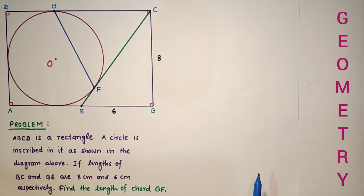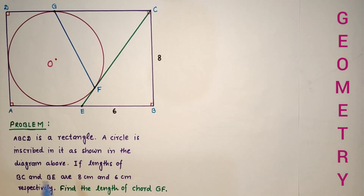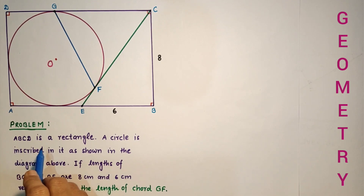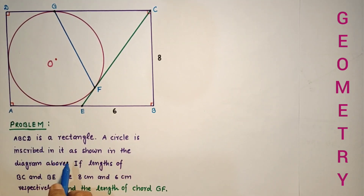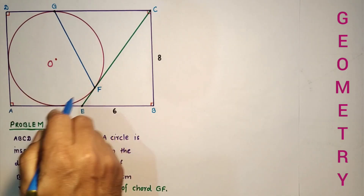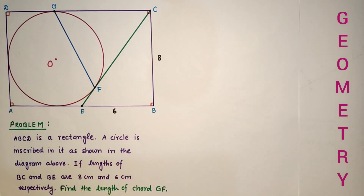Hi everyone, you are all welcome to this channel. Today we will discuss this question: ABCD is a rectangle and a circle is inscribed in it, as shown in this diagram.